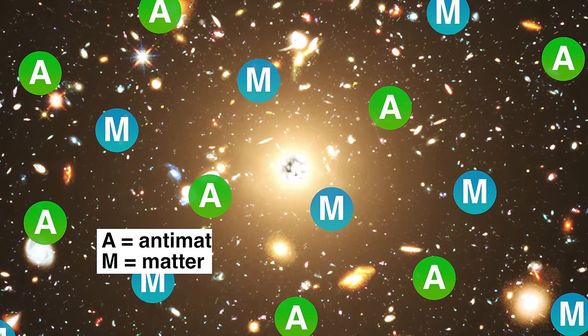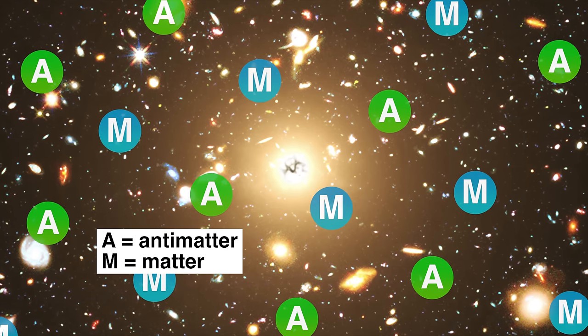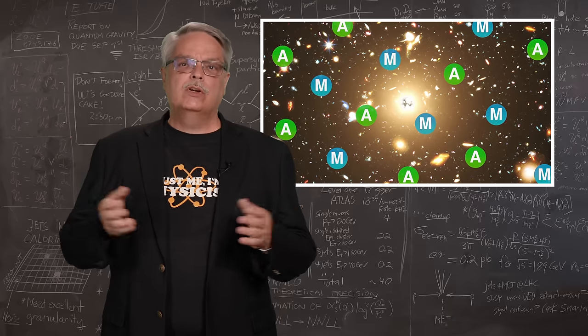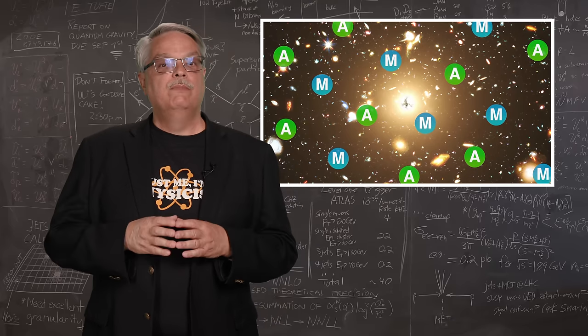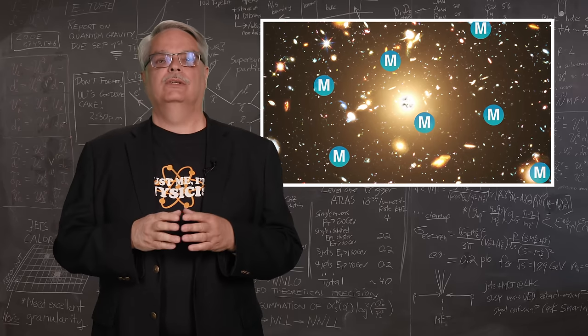The question arises because Einstein's theory of relativity and the theory of the Big Bang predicts that when the universe began, equal amounts of matter and antimatter were formed. For every proton we see, we should also see an antiproton. For every electron, we should see an antimatter electron. Yet, when we look around at the universe in which we live, we see only matter. So this is clearly a terrible prediction.